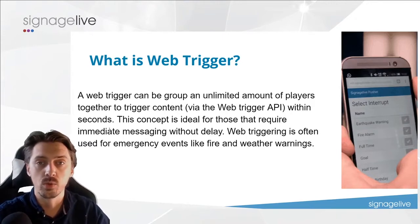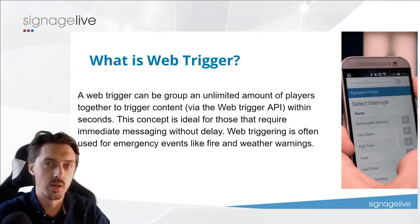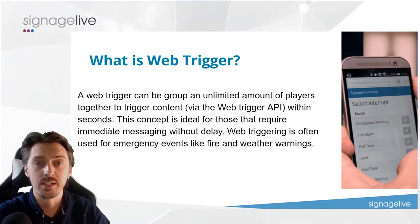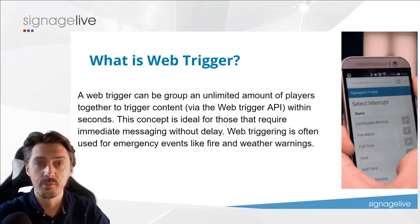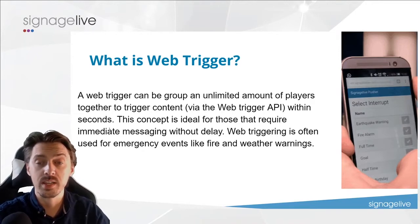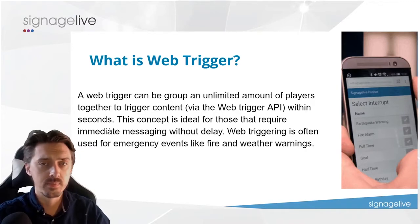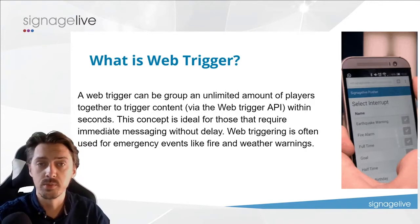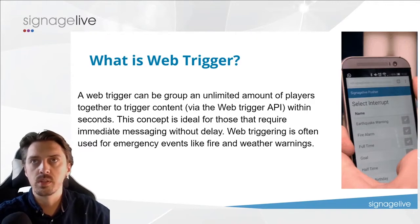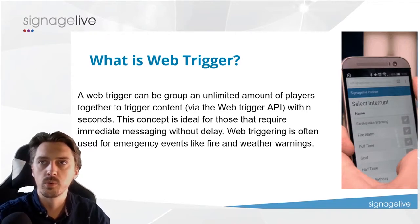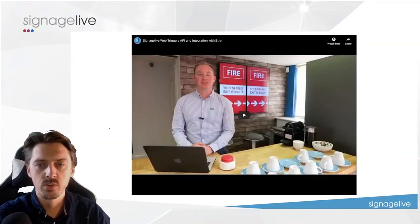Web triggers are definitely beneficial for emergency messaging. Rather than changing a playlist within Signage Live — which can take anywhere between one minute and 24 hours to take effect depending on your settings — a web trigger bypasses that. It uses a different API that runs immediately, triggering a content change within seconds. So it's ideal for immediate messaging without delay, and that's why it often gets used for events or corporate emergency messaging.